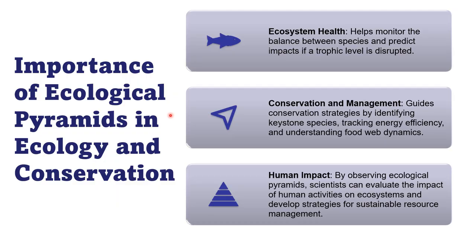Ecological pyramids are important in ecology and conservation. First, they help monitor the health of the ecosystem and predict disruptions — for example, if population numbers are disturbed, the ecosystem could collapse. They also guide conservation and management strategies, help identify keystone species, track energy efficiency, and understand food web dynamics. Finally, ecological pyramids allow us to evaluate the impact of human activities on ecosystems and develop strategies for sustainable resource management.